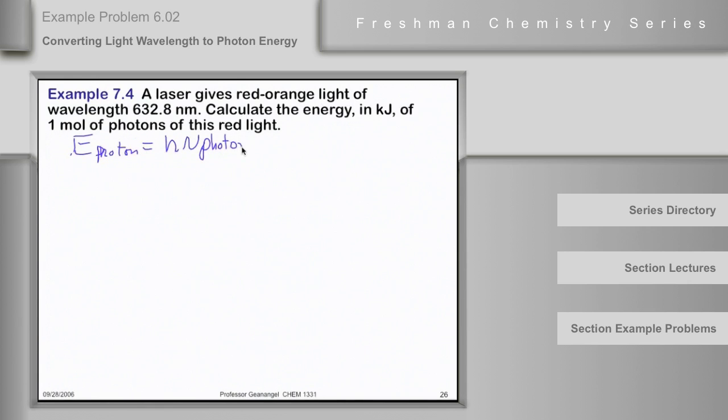But this time we're not given the frequency, we're given the wavelength. Since c is equal to nu times lambda, then nu is equal to c over lambda. And we can write this h nu of the photon as hc over lambda of the photon.